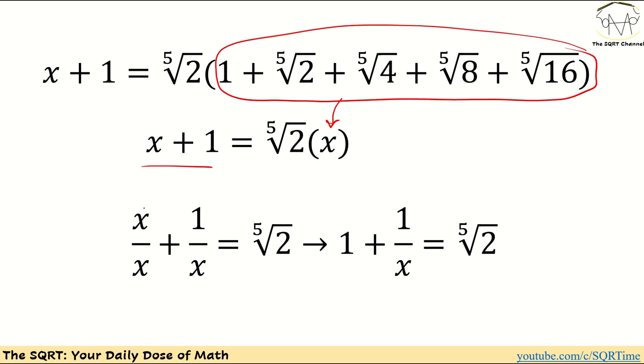And if we divide both sides by x, since x is not zero, I'm going to end up with x over x plus one over x equals to two to the power of one over five. So I can say that one plus one over x is basically the fifth root of two and that's something that I'm going to continue with.